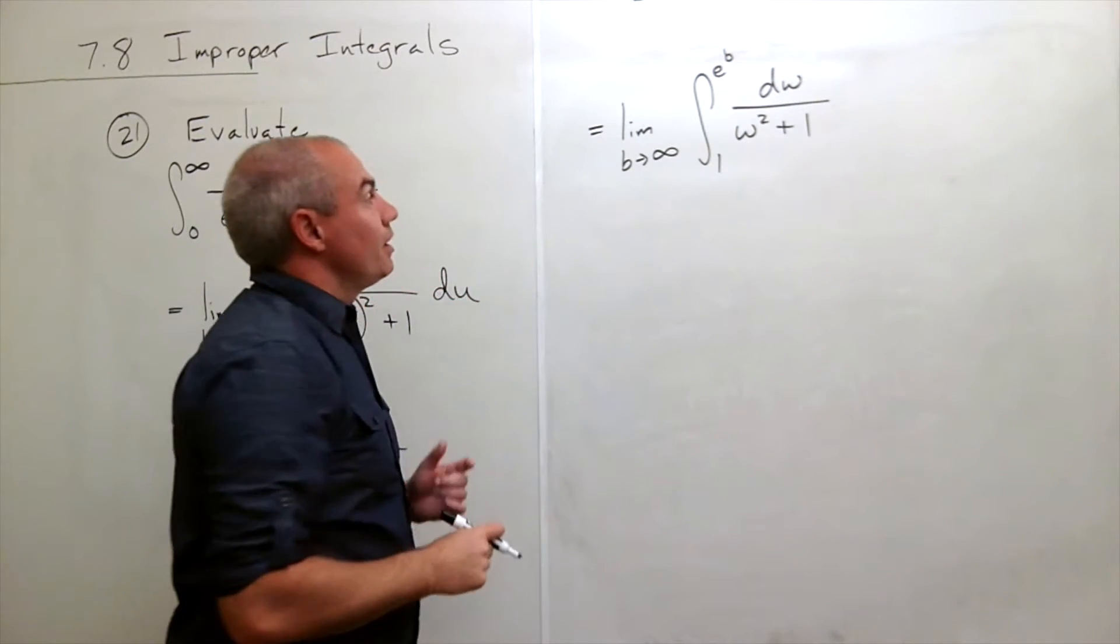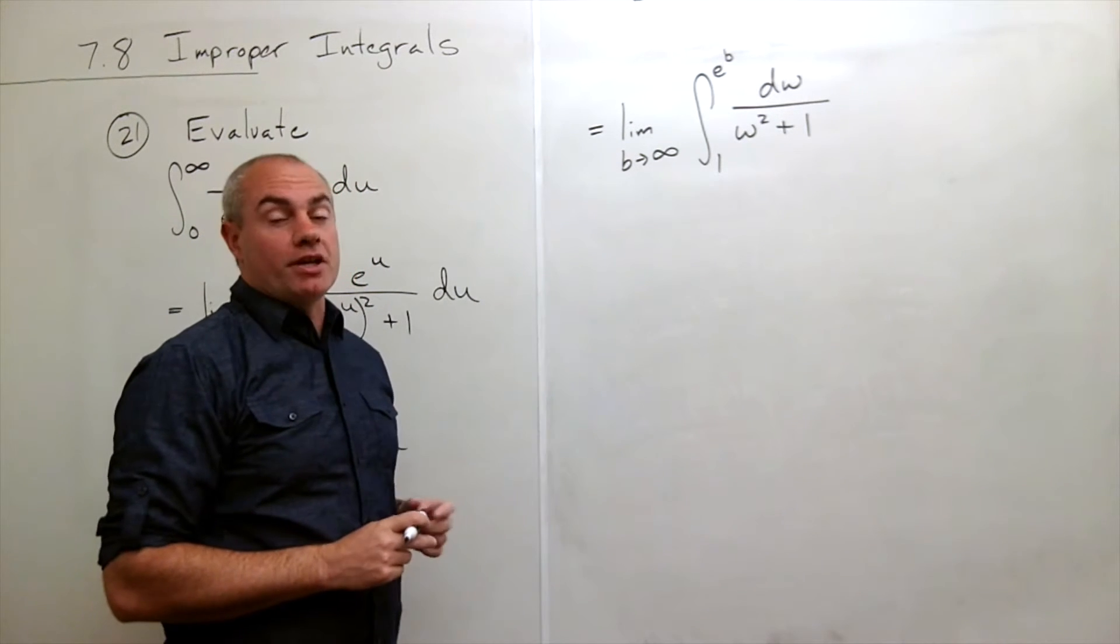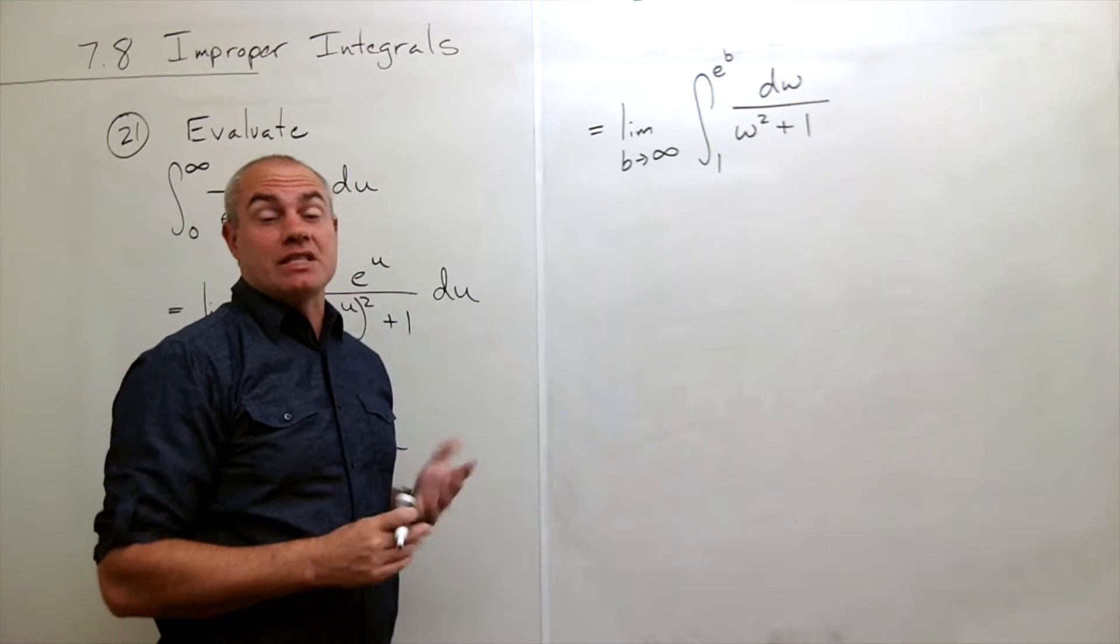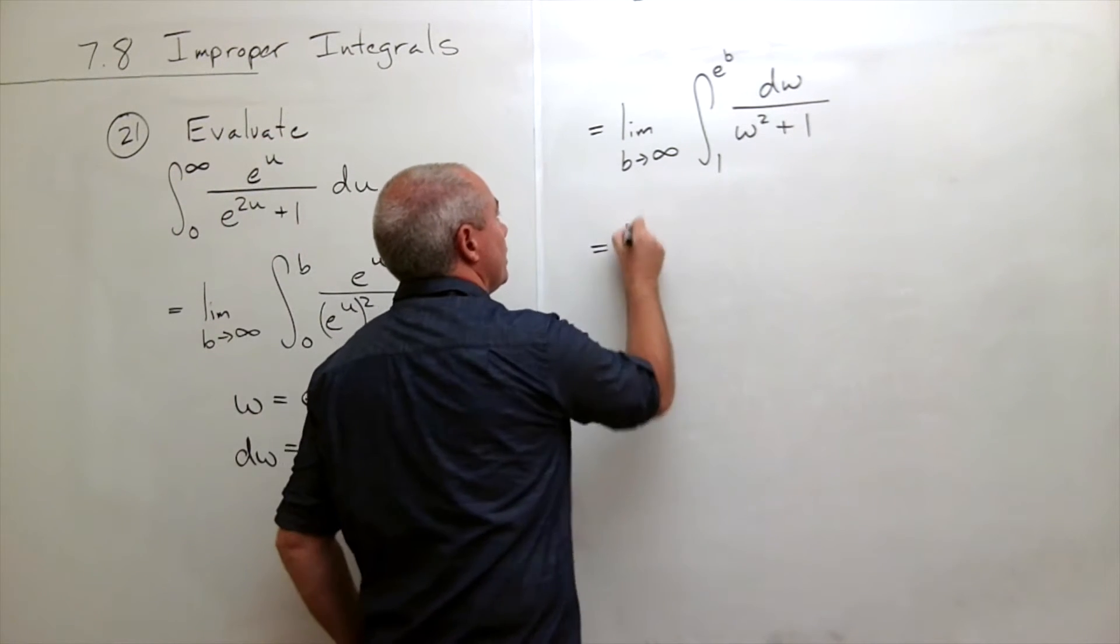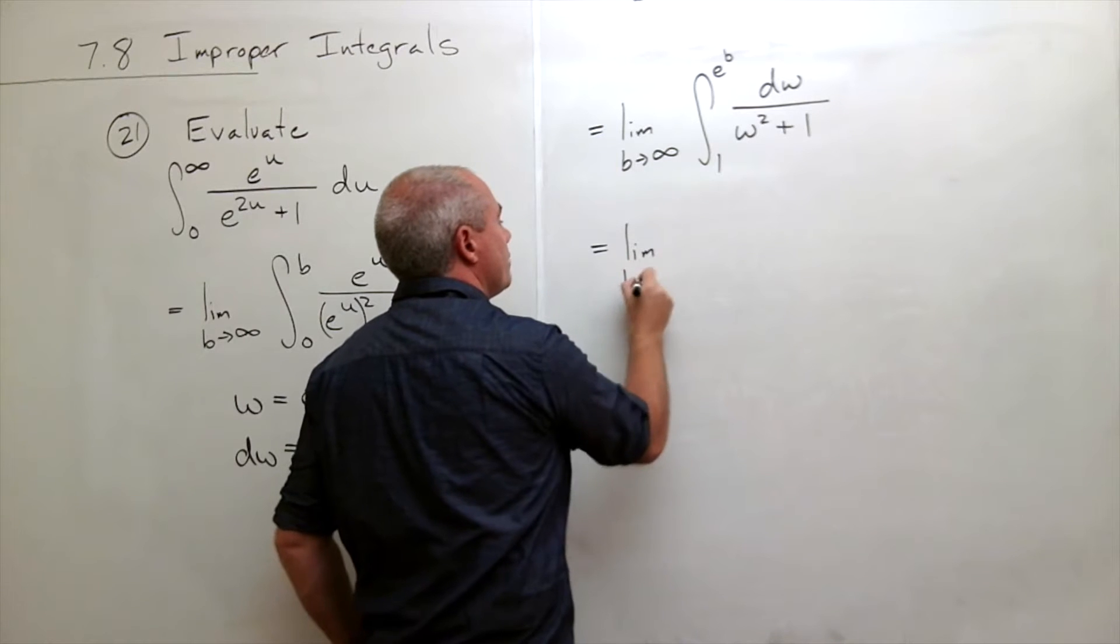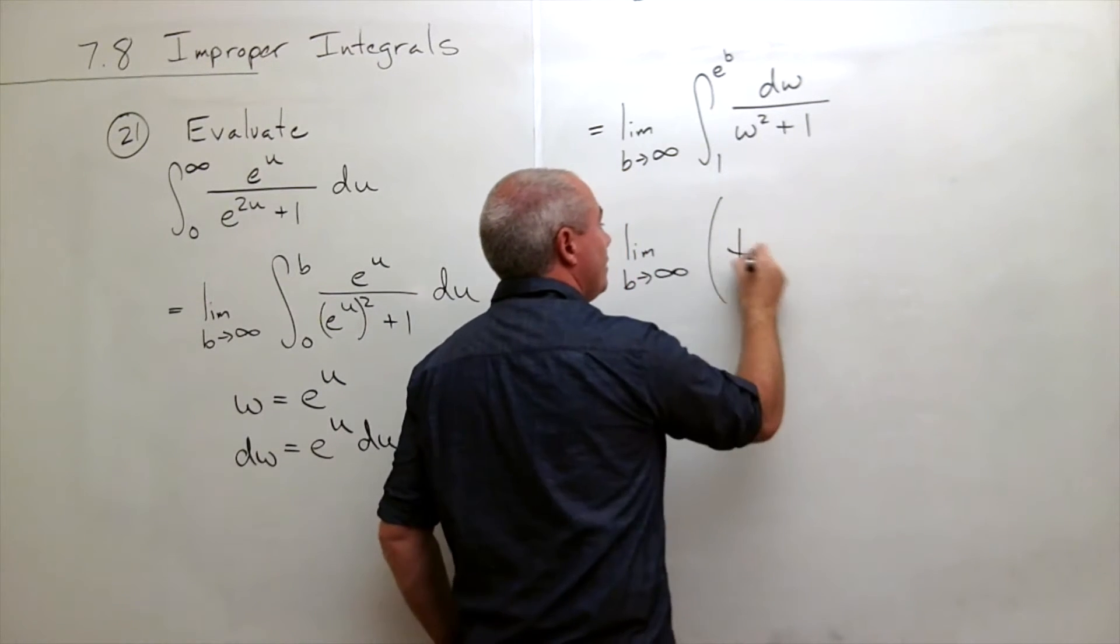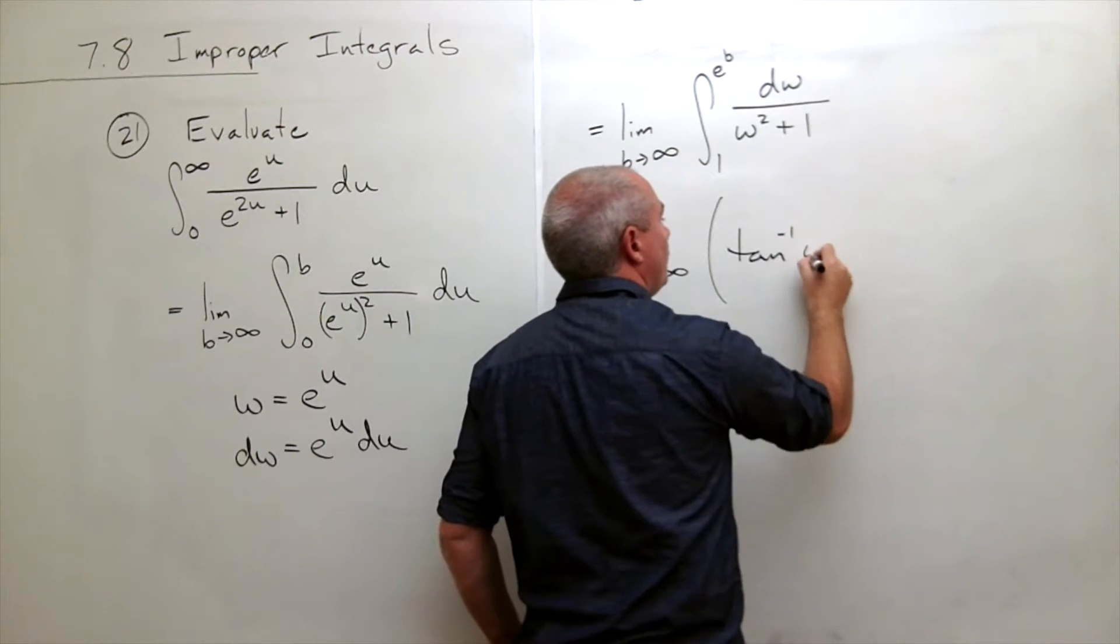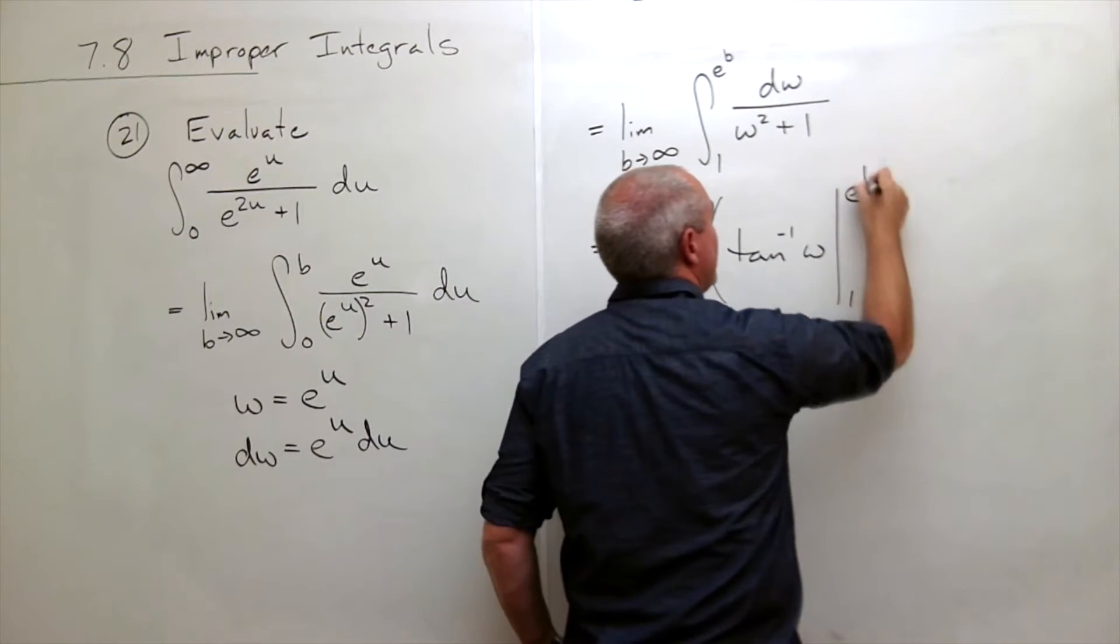Alright, the antiderivative here, I have 1 over w squared plus 1, we know that antiderivative is tan inverse of w. So this is equal to the limit as b goes to infinity of tan inverse of w evaluated from 1 to e to the b.